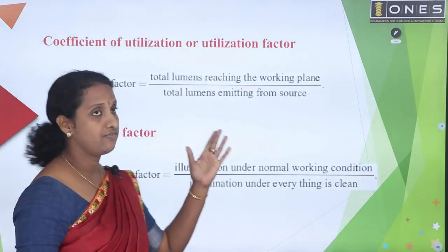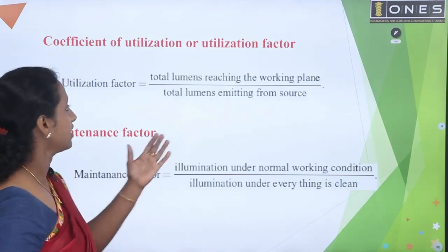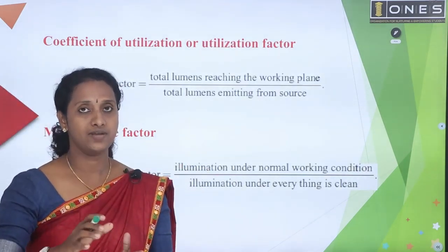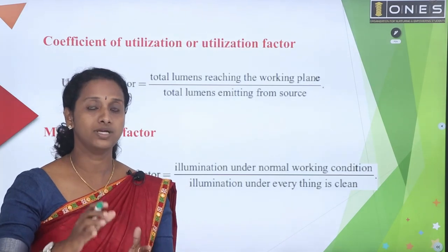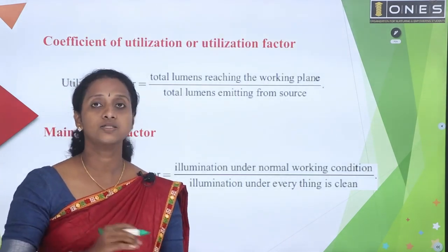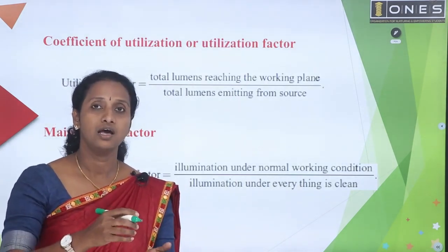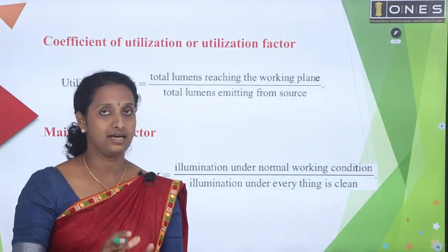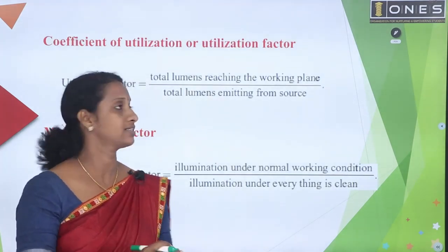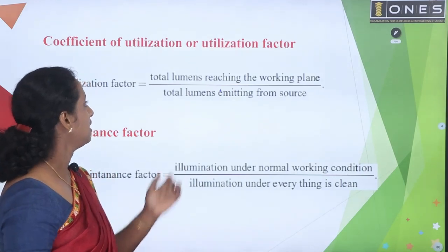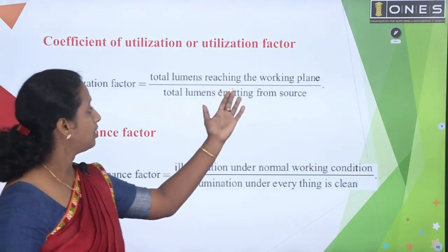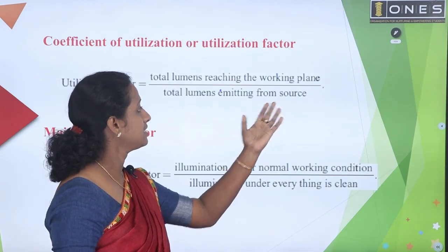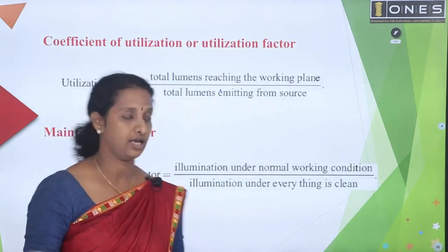Next, utilization factor. What is the utilization factor? The total luminous flux — lumens — not all of it reaches the working space; some is wasted. That is why we need to utilize the factor. It is the ratio of total lumens reaching the working plane divided by total lumens emitting from the source.